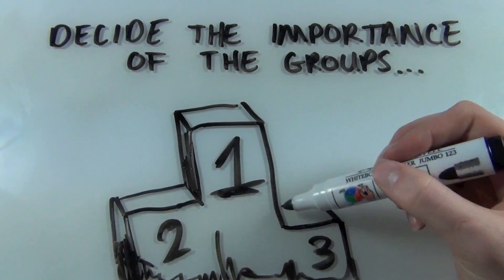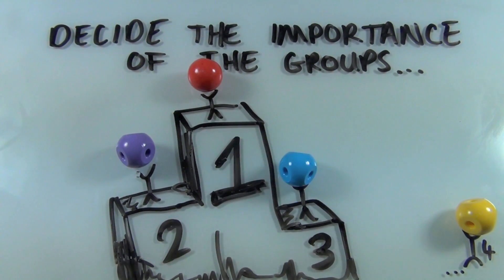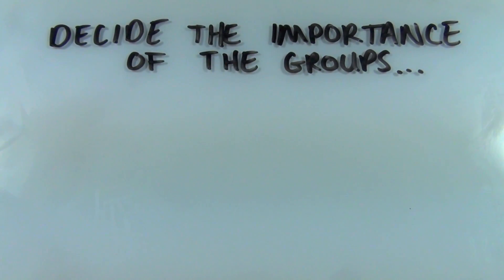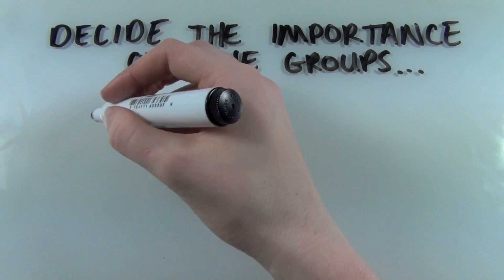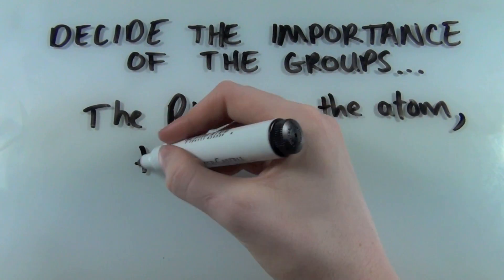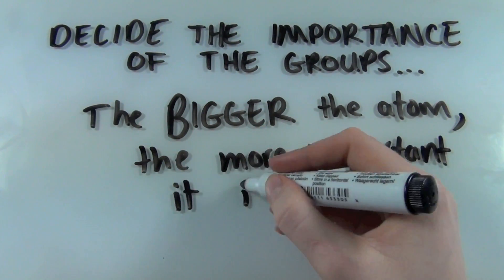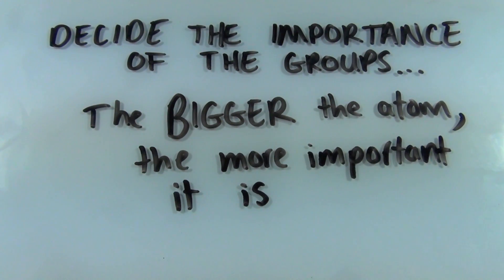So the next thing you've got to learn is how to order the groups. And how we order the groups is simply done by convention. What you do is you look at the first atom of the group that's connected to the chiral center, i.e. the carbon in the middle of everything. And you go to the periodic table and you see how big it is. And very simply, the bigger that atom is, the more important it is.